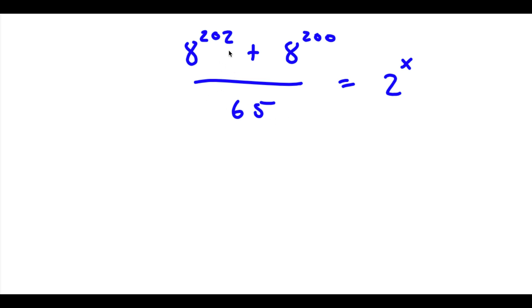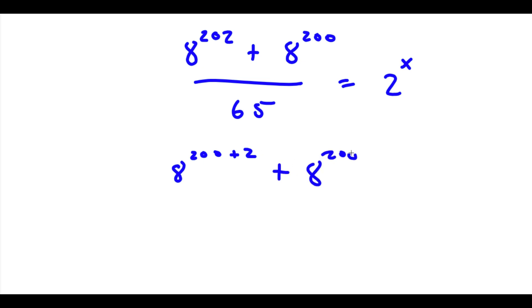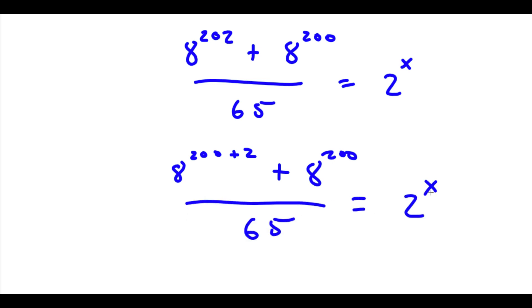I have 8 to the power of 202 plus 8 to the power of 200 over 65 is equal to 2 to the power of x. Now, 8 to the power of 202 we can rewrite as 8 to the power of 200 plus 2. So I have 8 to the power of 200 plus 2 plus 8 to the power of 200 over 65 is equal to 2 to the power of x.